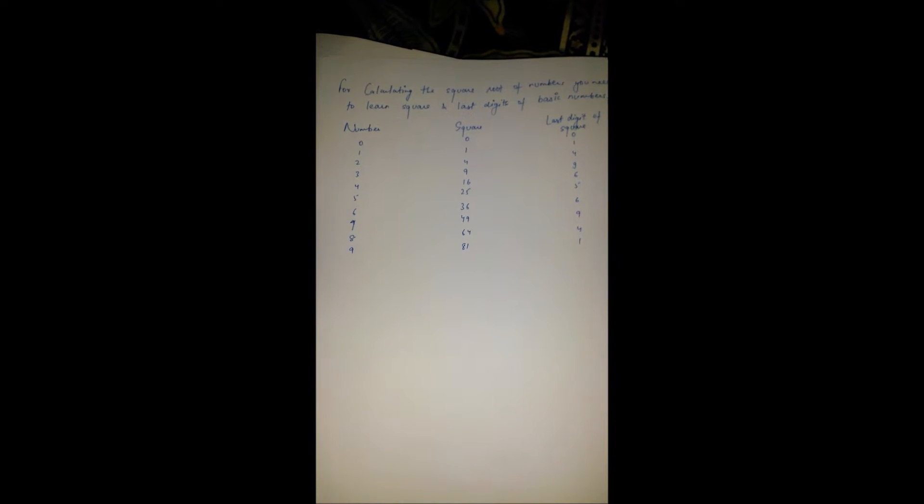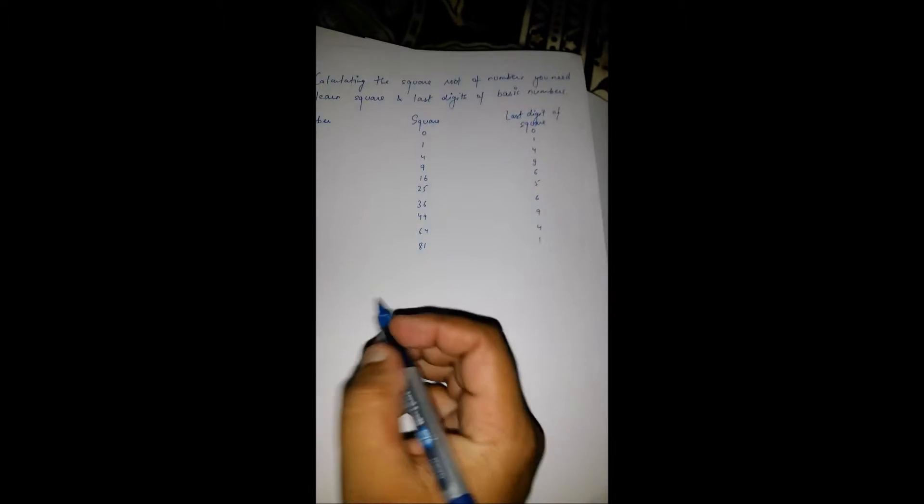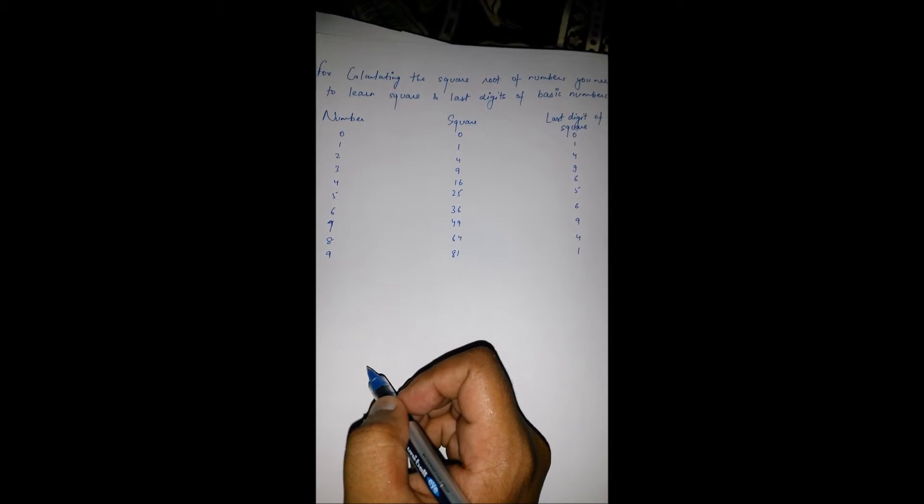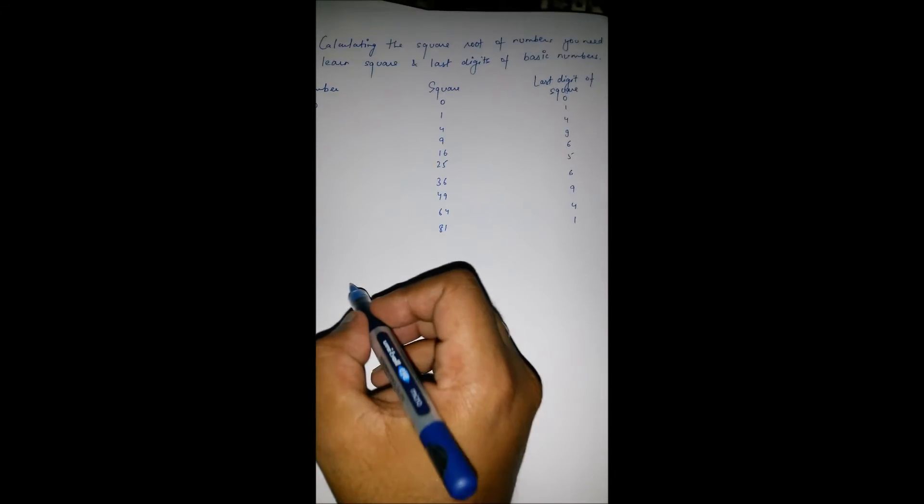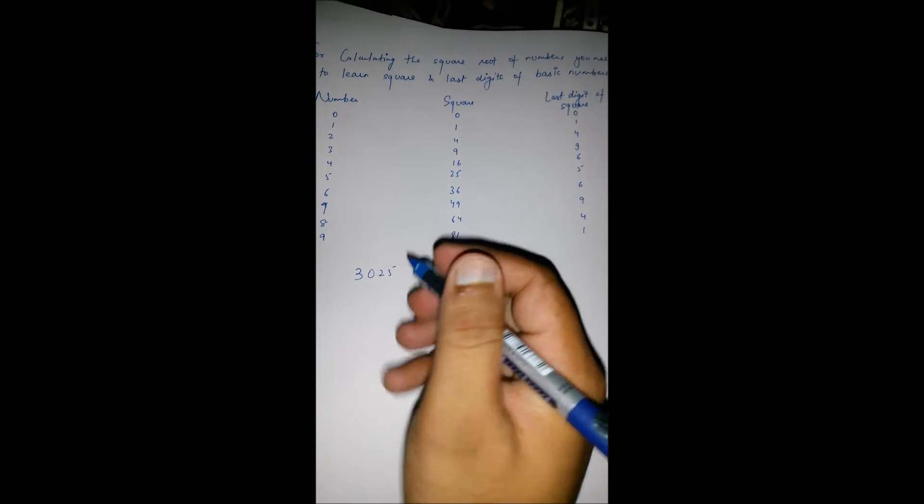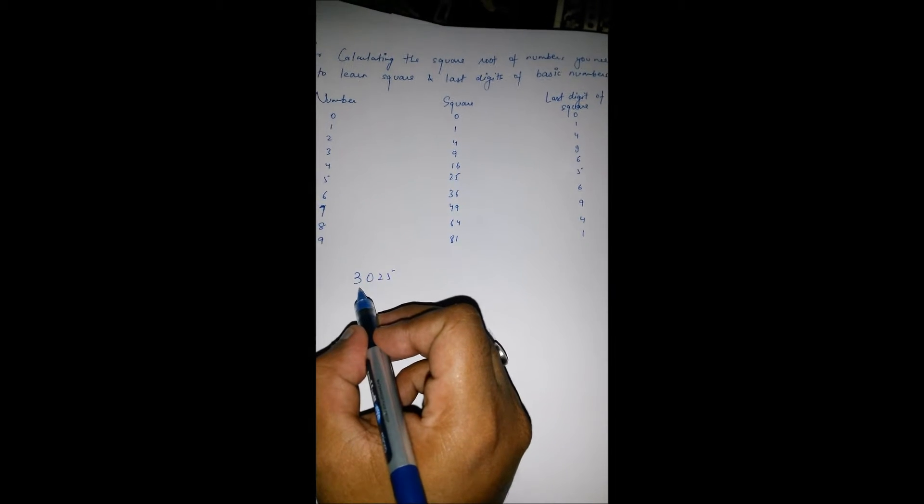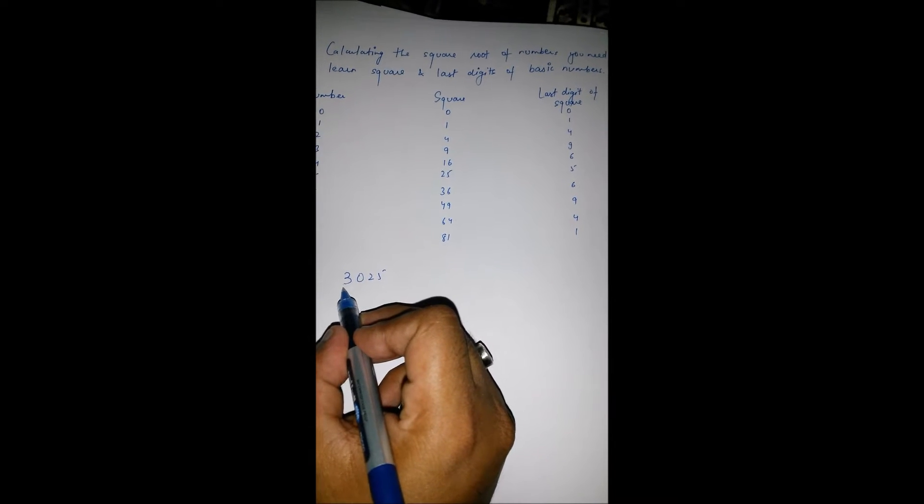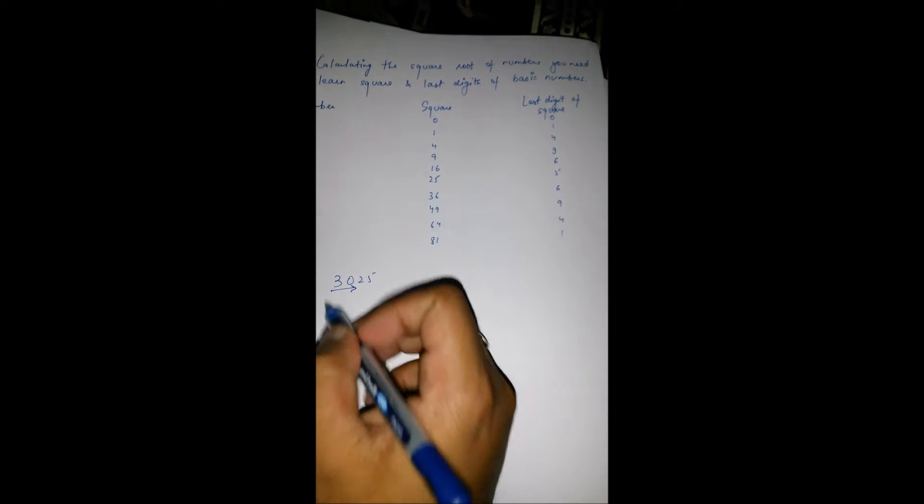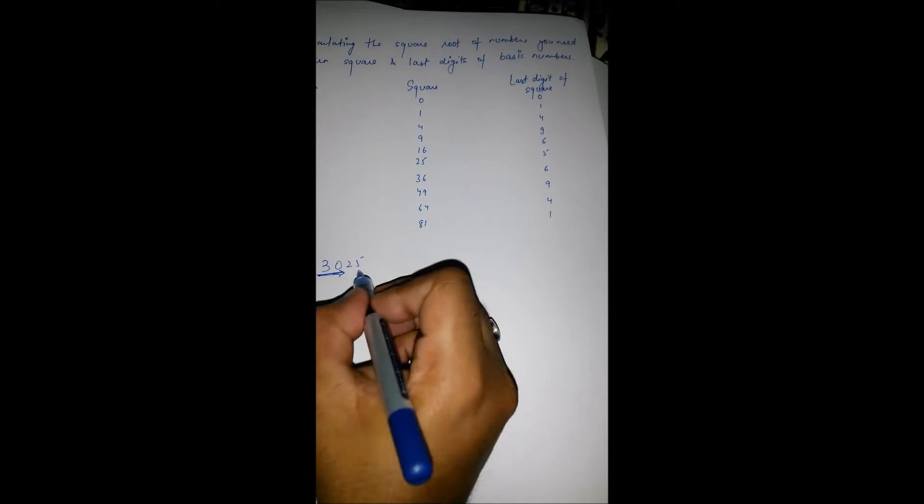To solve this type of question, we create multiple sets of a given number, taking two at a time, starting from the right. Suppose we have a number 3025, we take sets starting from the right. These are the two sets.